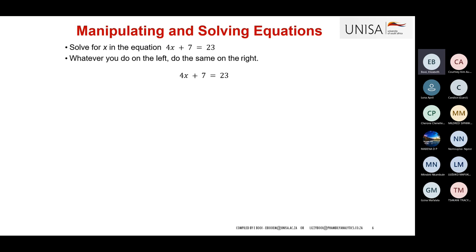When a value needs to move across the equal sign, the sign will change: if it was minus it becomes plus, if it was plus it becomes minus. If it is multiplying, to get rid of that value we divide; if it is dividing, to get rid of that value we multiply by that value.